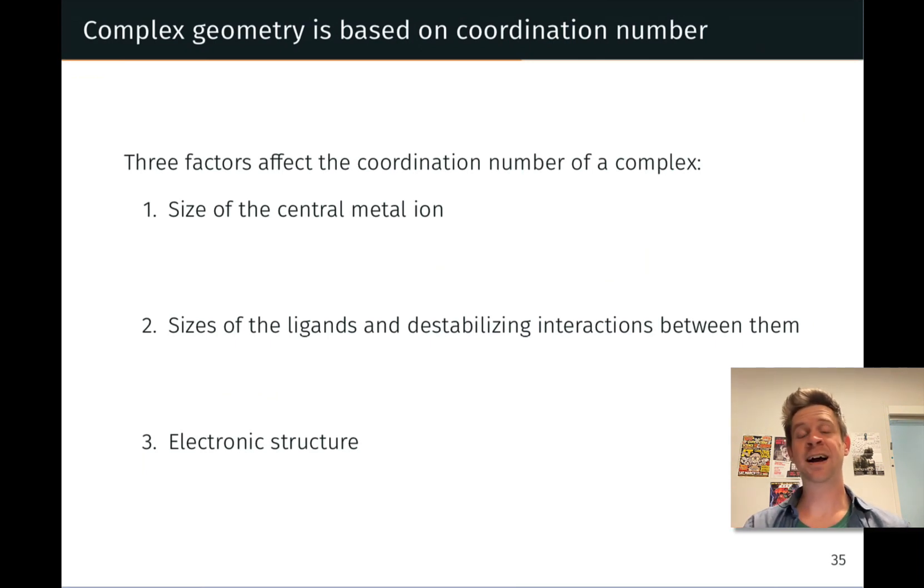And the first is the size of the central metal ion, or atom. Consider palladium versus nickel. Palladium and nickel are both in the same group, but palladium is in a lower period than nickel. So palladium is larger than nickel, pretty much across the board. This means that more ligands can fit around the larger palladium atom than the smaller nickel atom.